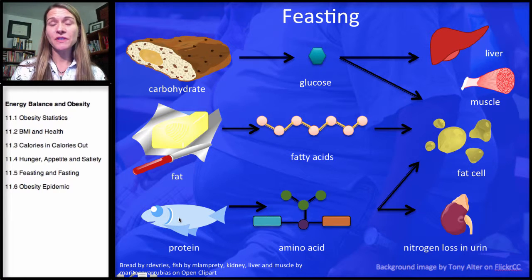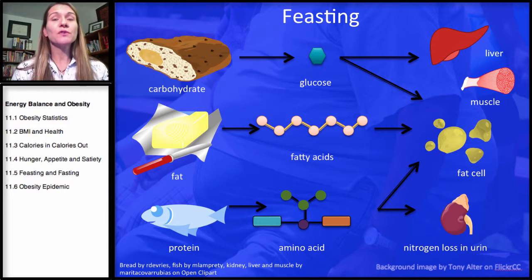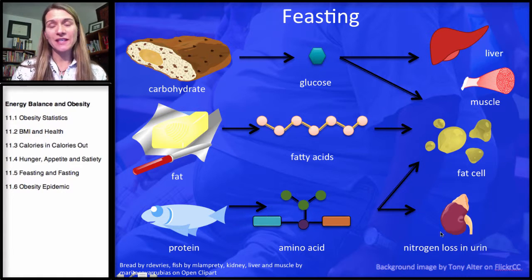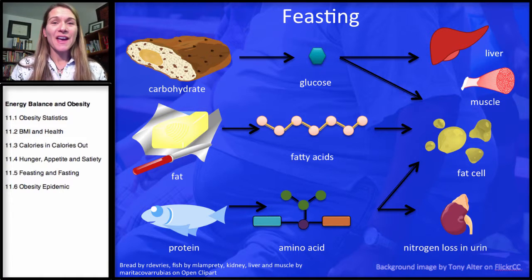Protein — this could be any protein source; it doesn't have to be fish or meat. We definitely obtain protein from a number of plant sources as well. Protein is broken down into amino acids and then absorbed. We don't really want to use protein for energy — if we do, it's a very inefficient process. If we consume too much protein, the body will actually break down these amino acids. We call this nitrogen wasting, because we're wasting the important amine group on these amino acids — the nitrogen that could be used as a building block to build proteins, structures, enzymes, and antibodies.